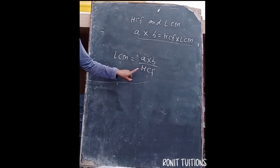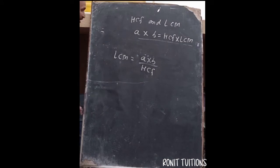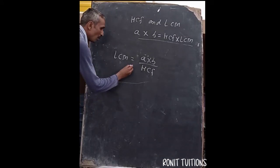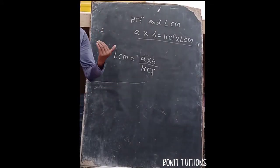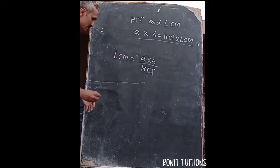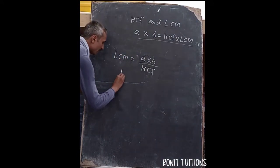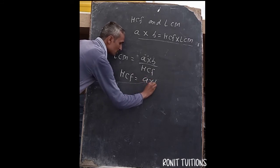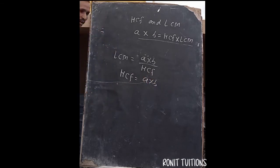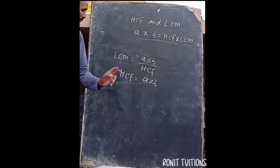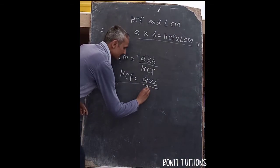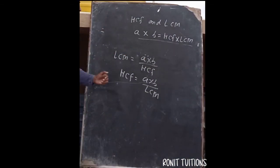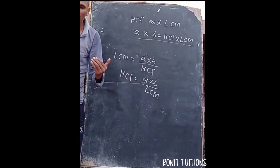Similarly, if you know the LCM and want to find the HCF of the two given numbers, you can write: HCF = (A × B) / LCM. Here A and B are the two given numbers, and you divide their product by the LCM to get the HCF.